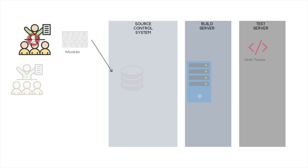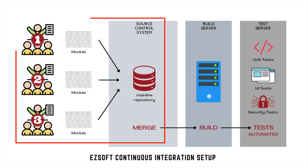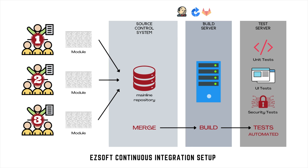After continuous integration was implemented, all developers in the three teams were required to check in small units of their code as soon as they were written, directly into the mainline repository — possibly multiple times a day — instead of waiting for the sprint to end. Continuous integration tools like Jenkins, Bamboo, and GitLab helped constantly check the mainline repository for changes, and when a change was detected, those tools made the code pass through a build pipeline.